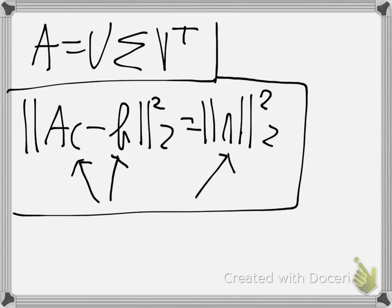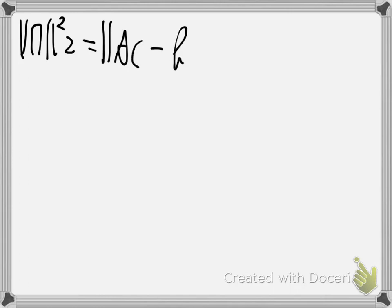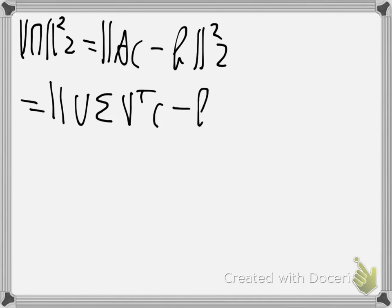If we rewrite that equation and substitute for A, we want the error to be minimal. When we substitute for A, we get U Σ V^T times C minus B should be the smallest possible.